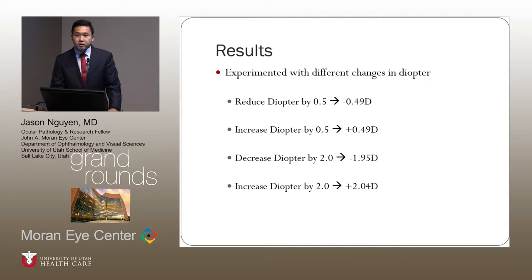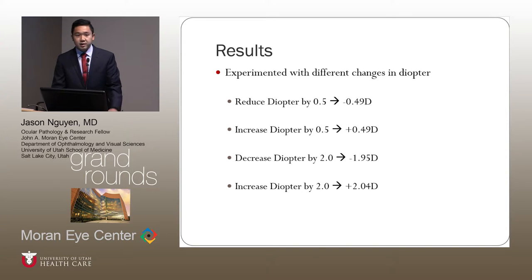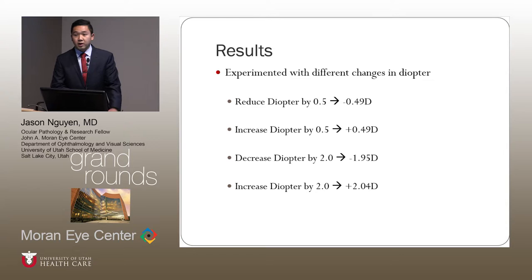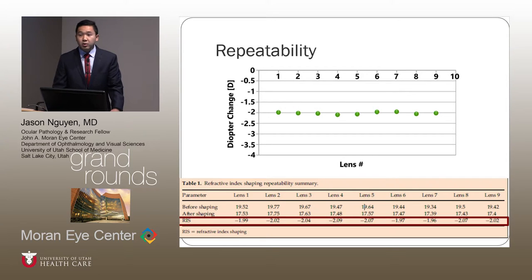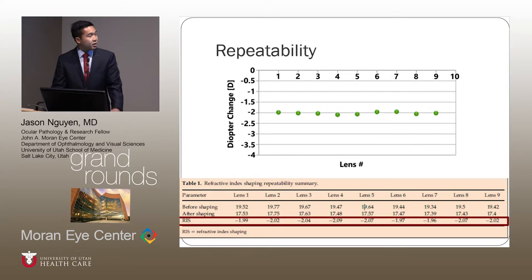This next slide summarizes the results. The company experimented with both reduction and increase in diopter, and with different increments, they got very close to all their targets. They then experimented with nine different IOLs to assess how repeatable it was. As you can see in both the chart and the table, not only is the process very repeatable, but it's very accurate.